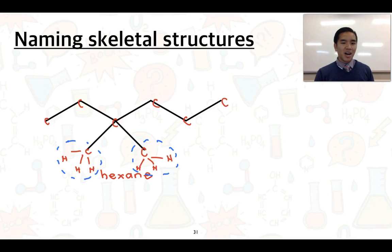And then we need to number these carbons so that these groups have the lowest possible sum, and to do that, we're going to number from left to right. So we have two methyl groups positioned on carbon-3.